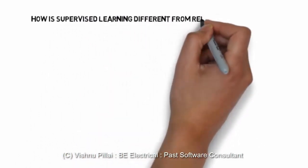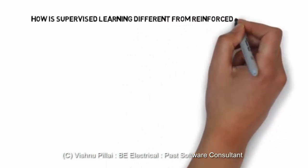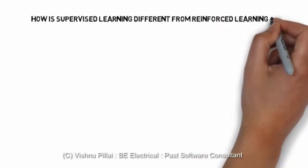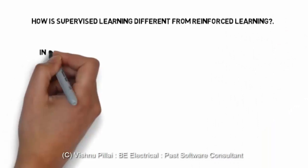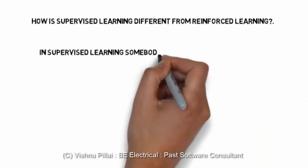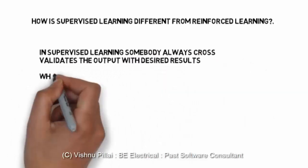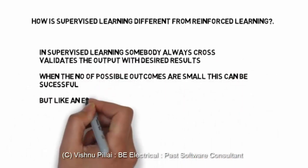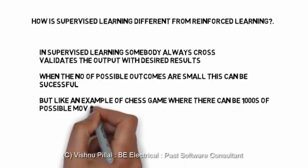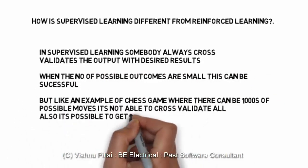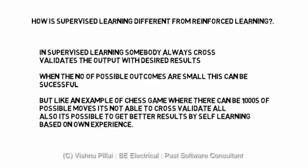So how is supervised learning different from reinforcement learning? Reinforced learning and supervised learning are somehow similar that they will include the labels. As in case of unsupervised learning the data did not include any label, but in supervised learning somebody always cross validates the output with desired results. When the number of possible outcomes are small this can be successful. But like an example of a chess game where there can be thousands of possible moves it's not possible to cross validate all.